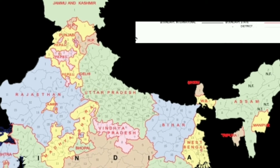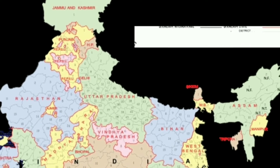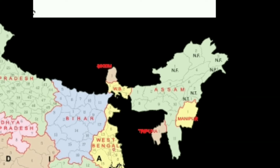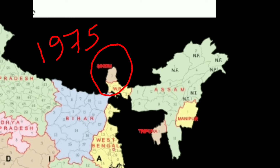And to the northeast, it's Assam, Manipur, and Tripura only. Please note that Sikkim remained an independent country until 1975.